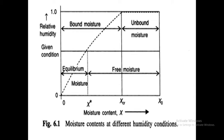In this figure, x0 minus xc is the unbound moisture. Moisture decreases below xc. The vapour pressure also decreases.